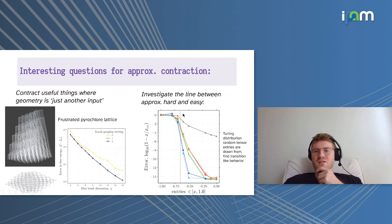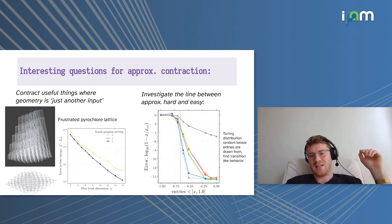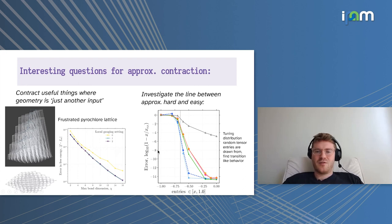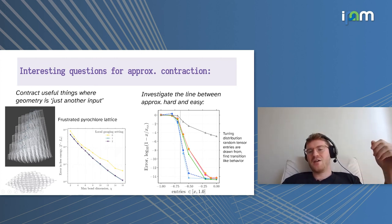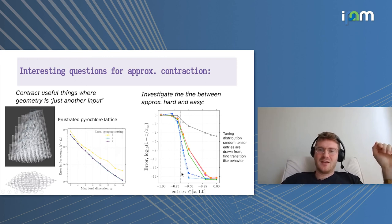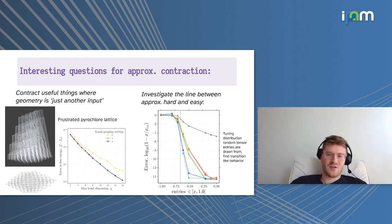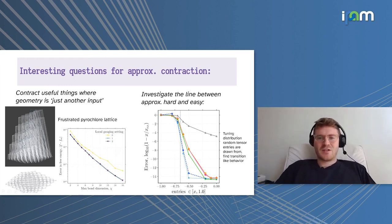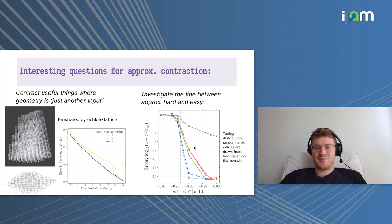Maybe more interestingly, can we do some computational investigations of exactly where the line between approximately hard to contract and approximately easy to contract is? Here's a graph where we're approximately contracting some 2D tensor network, and the logarithm of the errors on one side. Here, we're just choosing the entries of the tensor to be distributed between some value x and plus one. You can see on the right, when we get close to the case where all the entries are positive, we can very easily contract these things with up to machine precision. The different lines are just different approximate algorithms. Then as we tune this value, we find that we get into some regime where it's almost impossible, at least for this fixed bond size, to get any reasonable answer out. So it's kind of interesting that this is something you can just tune continuously between this hard and easy regime.